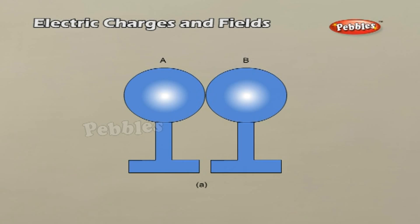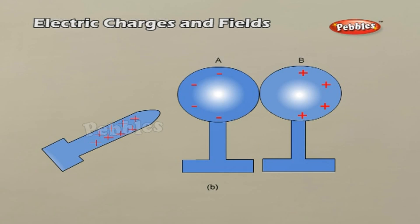Charging by Induction. When we touch a pith ball with an electrified plastic rod, some of the negative charges on the rod are transferred to the pith ball and it also gets charged — the pith ball is charged by contact. Now bring two metal spheres A and B supported on insulating stands into contact, as shown in figure A. Bring a positively charged rod near sphere A without touching it. The free electrons in the spheres are attracted towards the rod, leaving an excess of positive charge on the rear surface of sphere B. Both kinds of charges are bound in the metal spheres and reside on the surfaces.